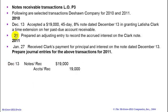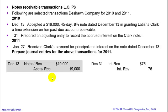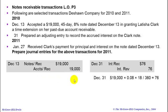On the 31st, we haven't received but we have earned interest on this note, so we're going to record that. We're going to debit interest receivable instead of cash, and credit interest revenue for $76. That is a calculation made up of $19,000 times 8% times 18 days — because there were 18 days from the 13th to the 31st — divided by 360.